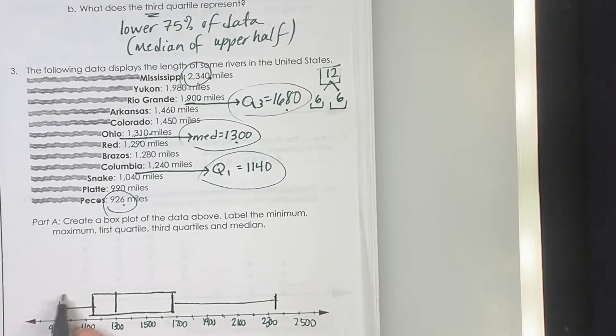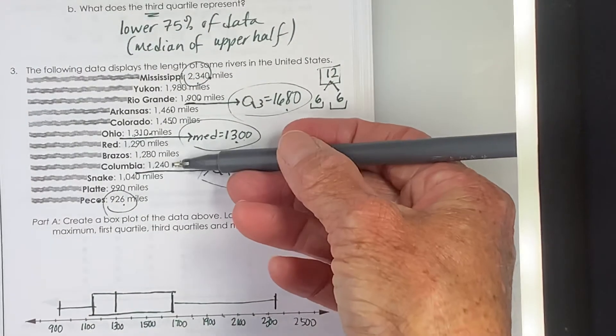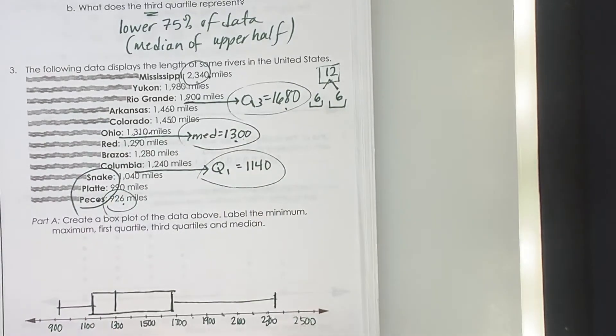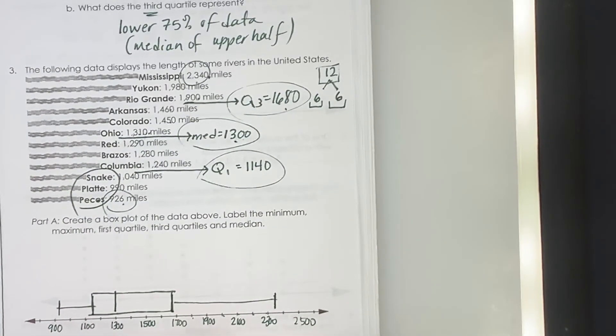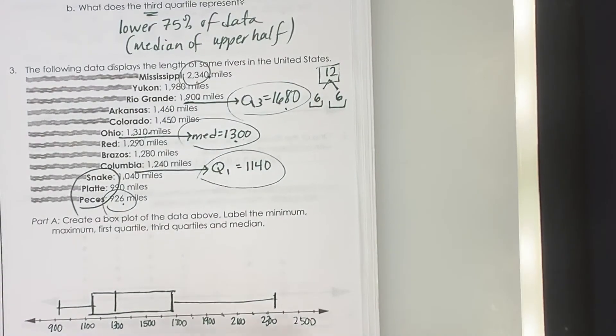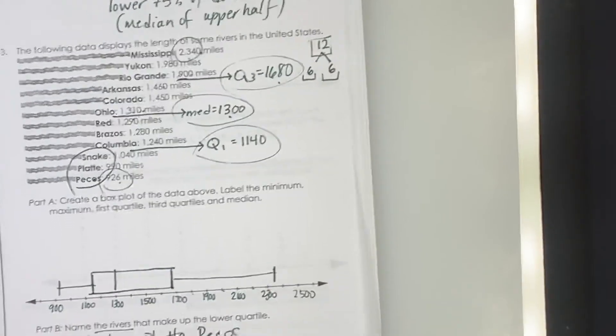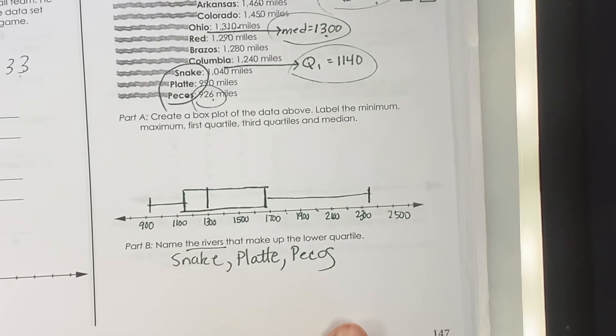And name the rivers that make up the lower quartile. So that's everything that was below Q1. It's going to be these three rivers. And they do ask us to name the rivers, so we should list them. And there you go. I hope you got those right. Sorry. Here you go. I couldn't see what I wrote down there.